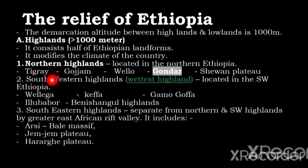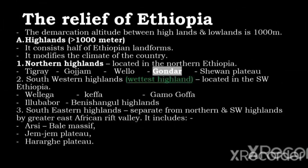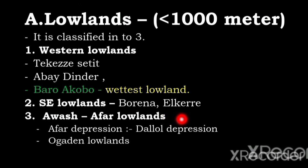To summarize: Northern Highland, South-Western Highland, and South-Eastern Highland are the highland groups. Western Lowland, South-Eastern Lowlands, and Awash-Afar Lowlands are the lowland groups. Thank you for your listening and attention. That is all about today's lesson. Goodbye.